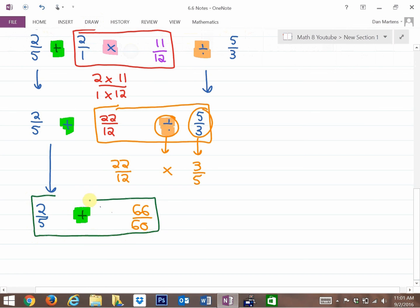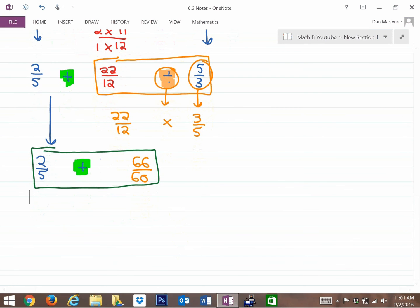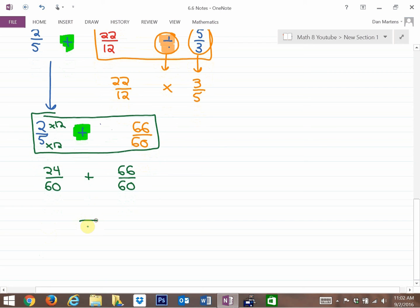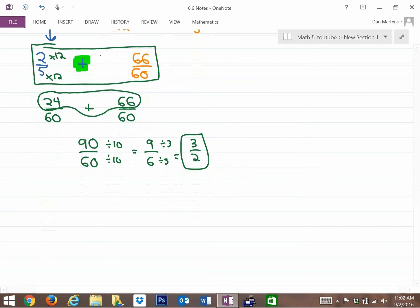Bring down the last operation. We've simplified three out of four operations, so now the final operation is adding. For adding, we need a common denominator. 60 is our common denominator. 5 goes into 60 twelve times, so multiply this fraction by 12: 2 times 12 is 24 over 60, and we have 66 over 60. The denominator remains the same: 24 plus 66 is 90, so our answer is 90/60. Now reduce to lowest terms: 90 divided by 10 is 9, 60 divided by 10 is 6. Divide by 3: this becomes 3/2, our final answer.